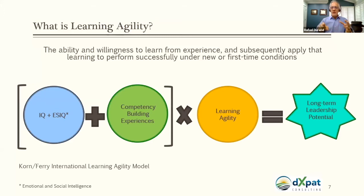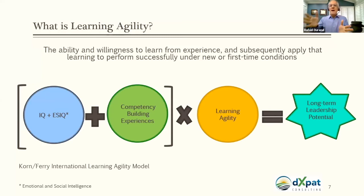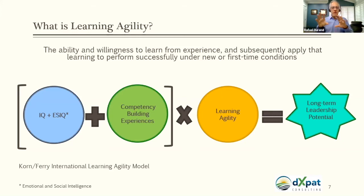Later, Korn Ferry International came up with a formula: IQ — the intelligence we all bring to the table — plus emotional and social intelligence, potentiated by being exposed to competency-building experiences, and then multiplied by that ability and willingness to learn from those experiences and apply new skills into new or first-time conditions. That is what makes long-term leadership potential possible, and it differentiates a high performer from a high potential.